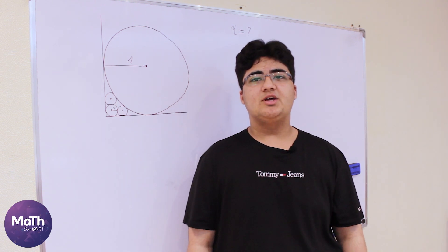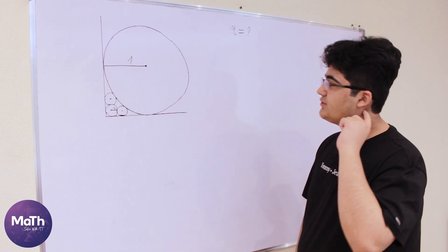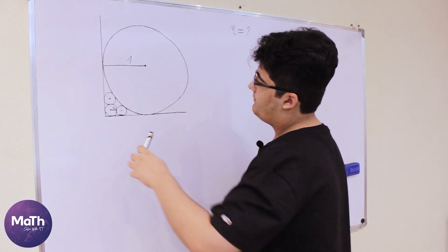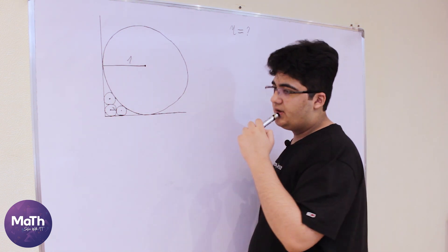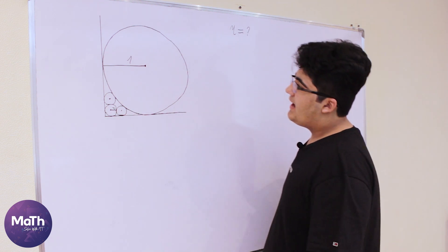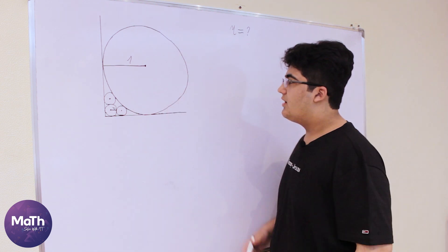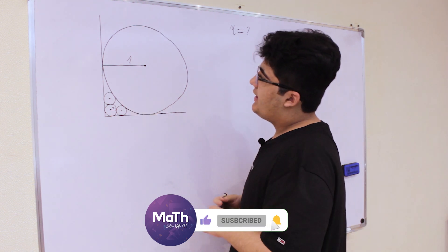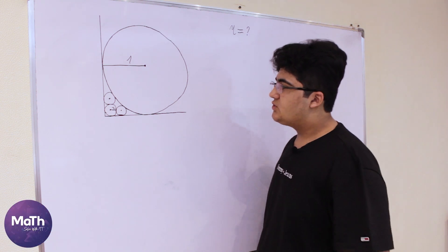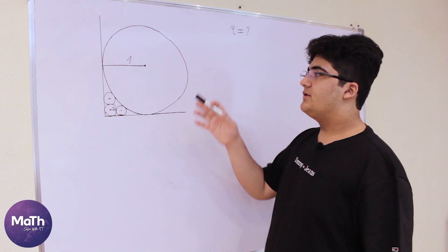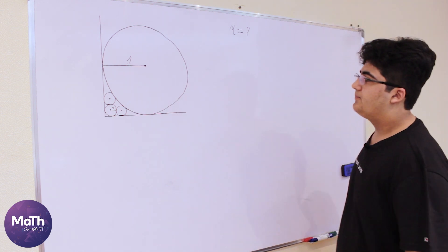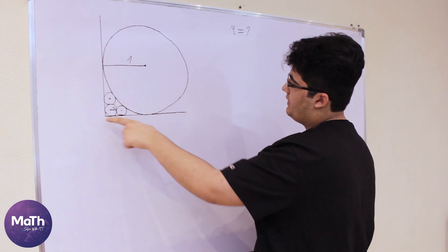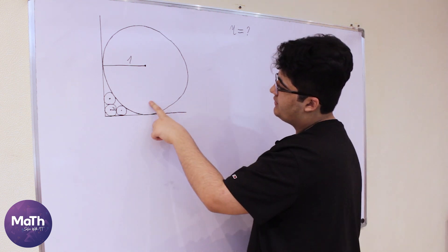Hi guys and welcome back to my channel. Today we have an interesting circle problem. We have three small circles where two of them are tangent to one of them, and we have a bigger circle which is tangent to two of those circles. We also have line segments which are tangent to all four circles — one line segment tangent to the bigger one and these two smaller ones, and another tangent to the bigger one and these two.